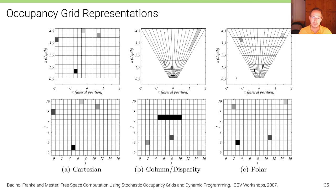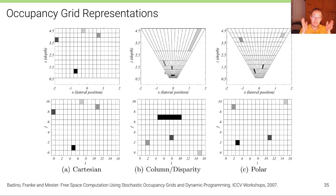Here on the right we can see the column/disparity representation, where we have non-equally sized bins because we have discretized based on the image column and the disparity dimension in the image domain, leading to non-equally sized bins that are all facing towards the camera coordinate origin. Finally, we have the polar representation, where bins also follow this perspective projection but are equally sized in terms of the depth C dimension in the bird's-eye view.